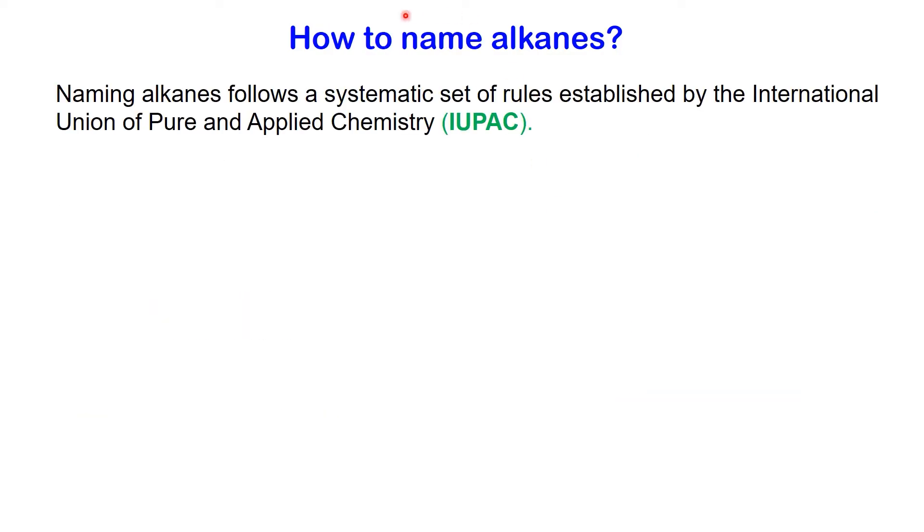How to name alkanes? Naming alkanes follows a systematic set of rules established by the International Union of Pure and Applied Chemistry, IUPAC. Here's a step-by-step guide. The name of every organic molecule has three parts: prefix plus parent plus suffix. The suffix for alkanes is -ane.